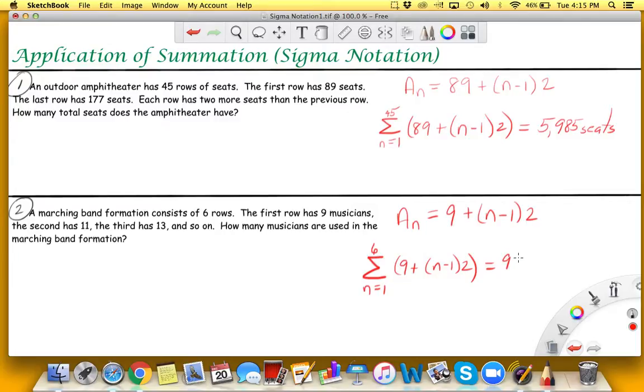And that is going to give us a grand total of 84. So there are 84 musicians in this band formation. Now once again, if you're not familiar with an arithmetic sequence or series, then you can go back and look in the list of videos. There's a playlist with videos teaching you about arithmetic sequences as well.